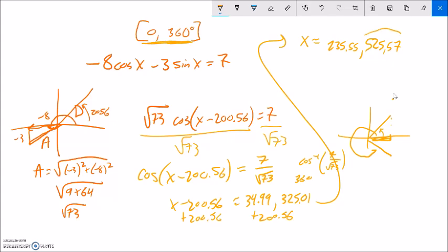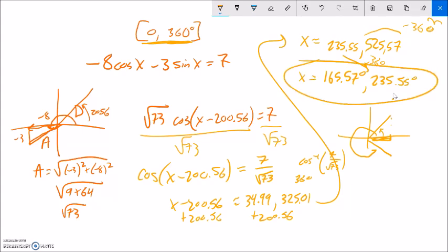So that's too big. But it is another solution. So my period here is 360. So just like I can add 360s to everything to get the next couple angles, I can also subtract 360 from something to get the previous angle. So I'm going to subtract 360 from this to get my other answer. So 525.57 minus 360, that gives me 165.57. And then this 235 is fine, 235.55. So x is equal to those. And again, the only reason I had to do that because it was outside of the range for the answers that I was looking for.